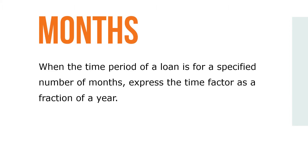When the time period of a loan is for a specified number of months, express the time factor as a fraction of a year. For example, a loan for two months would have a factor of two over twelve.